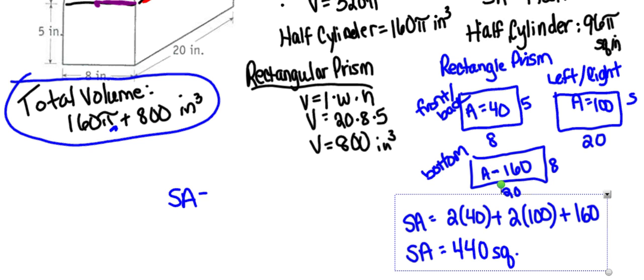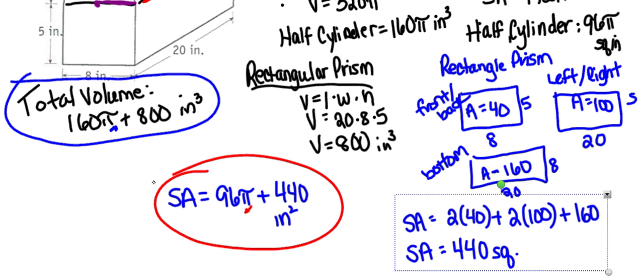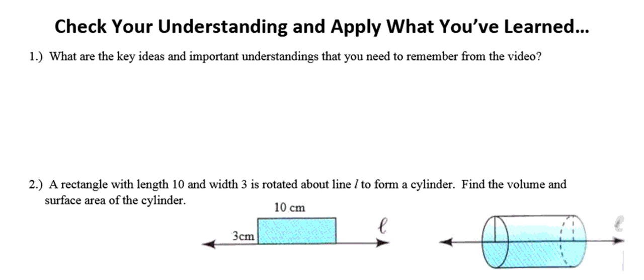The total surface area is 96 pi for the half cylinder plus 440 square inches for the rectangular prism. These two terms are not like terms and cannot be combined. At the top of your page, summarize the key ideas and important understandings in your own words, and apply what you know to solve the problems on the next page.